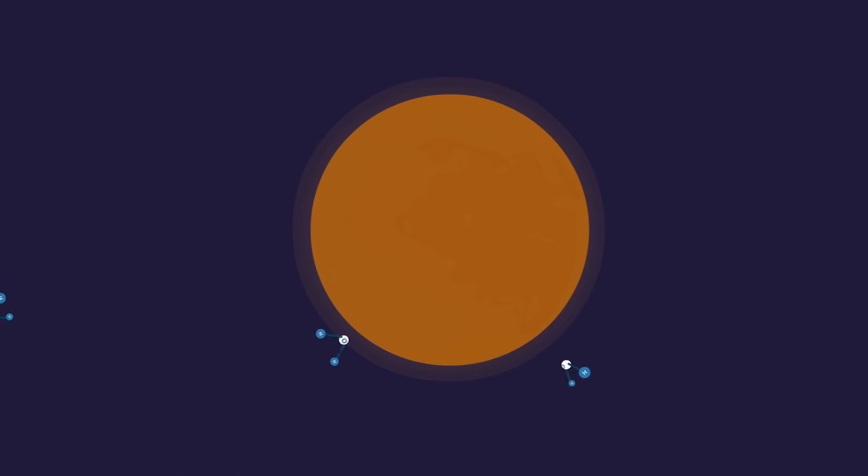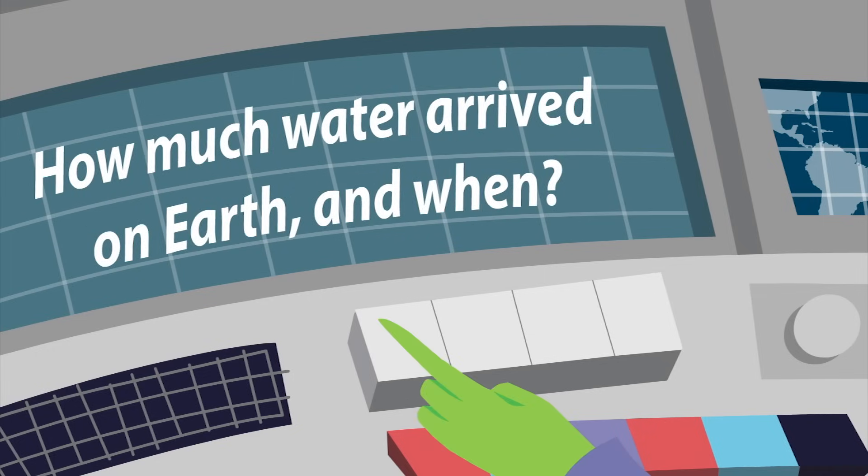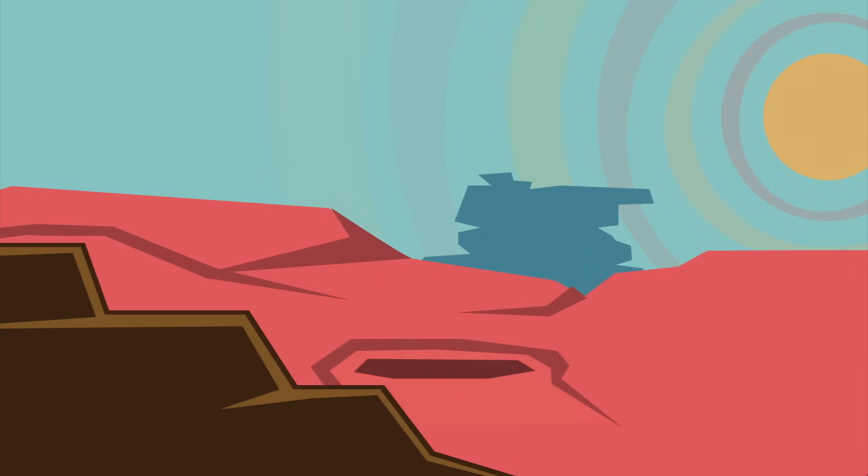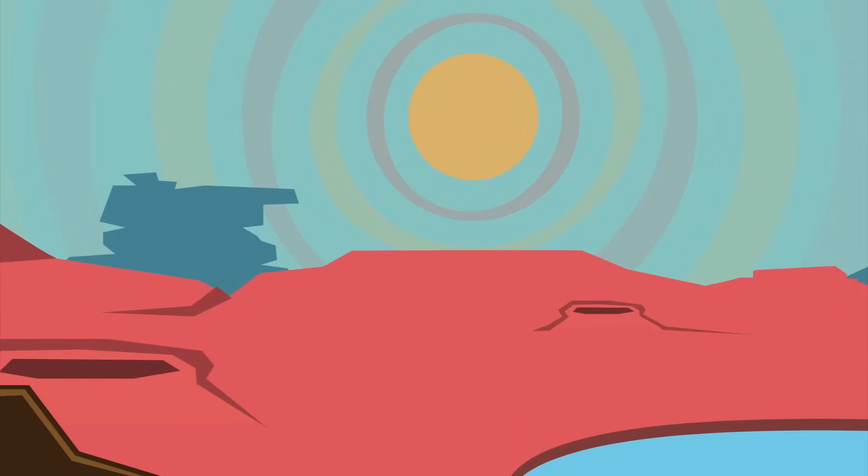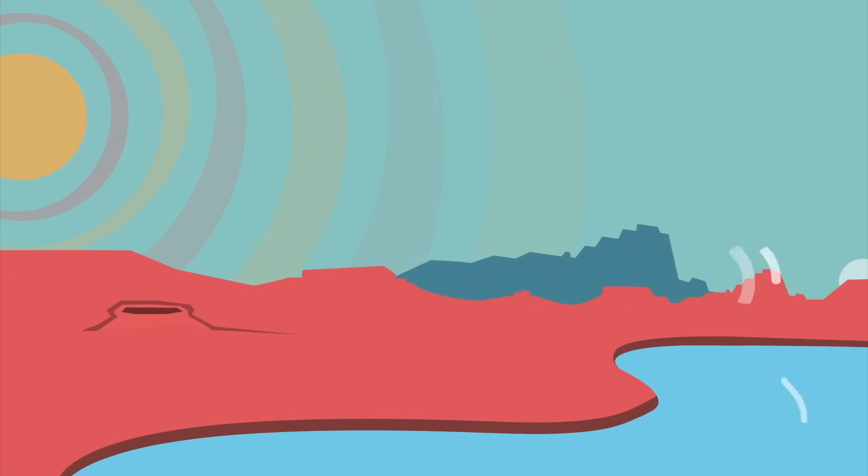But there's a big question that we don't have the answer to. How much water arrived on Earth, and when? If, as one theory goes, relatively small amounts of water were present on Earth when the rock formed, the high temperatures and lack of any surrounding atmosphere would have caused it to evaporate back into space.